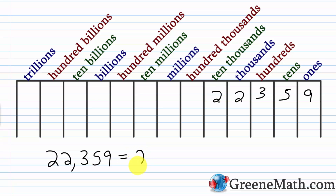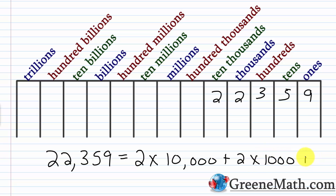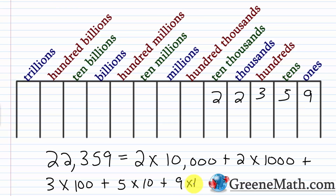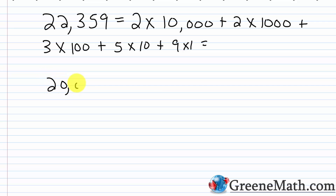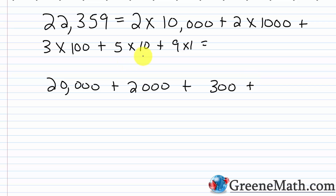So there's a 2 in the 10,000s place, so 2 times 10,000. Plus, we have a 2 in the 1,000s place, so 2 times 1,000. Plus, we have a 3 in the 100s place, so 3 times 100. Plus, we have a 5 in the 10s place, so 5 times 10. And then lastly, plus, we have a 9 in the 1s place, so 9 times 1. Let's do some multiplication: 2 times 10,000 is 20,000. Plus 2 times 1,000 is 2,000. Plus 3 times 100 is 300. Plus 5 times 10 is 50. And then plus 9 times 1, that's 9.